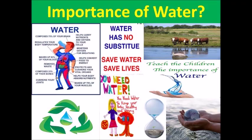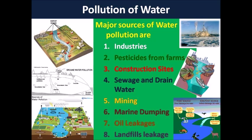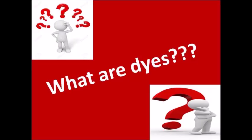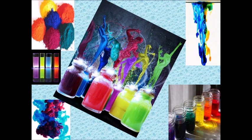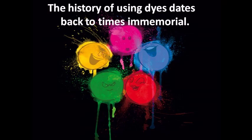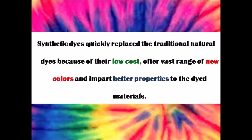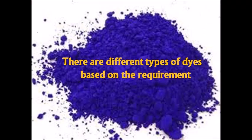Water is essential and is used by all flora and fauna present on earth. Injurious leakage from various sources pollutes the open and underground water systems. Dye is a colored substance that has an affinity to the substrate to which it is applied. The first dye dates back to a very long time, and the first human-made dye is Mauveine, invented by Perkin.